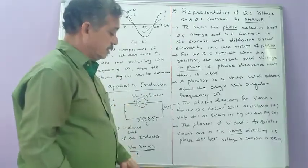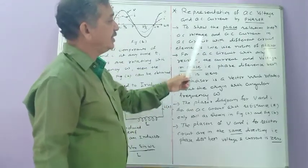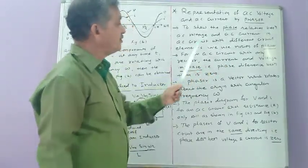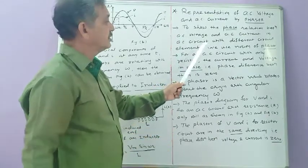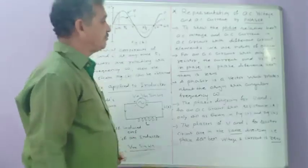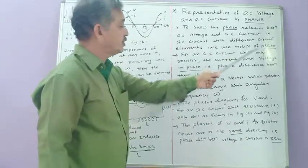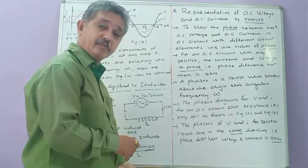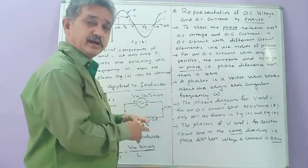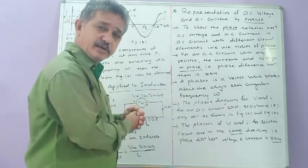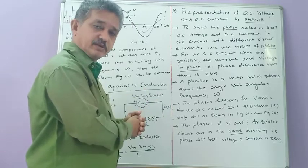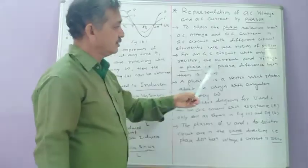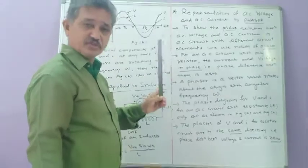To show the phase relation between AC voltage and AC current in an AC circuit with different circuit elements — like resistor, inductor, capacitor — we use the notion of phasors. For an AC source connected with a resistor, the phasor of current and phasor of voltage rotate at the same time with the same angular speed and from the same initial position, because of which they are always in phase.